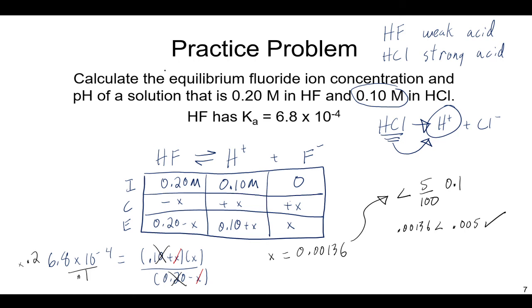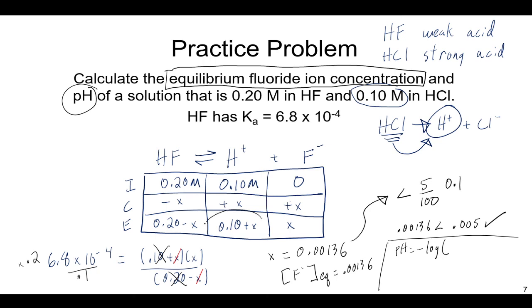This equilibrium fluoride ion concentration, that is what x represents. If you're calculating the pH, which we might do and have to do here, a lot of students will just take negative log of this x because they're used to this x representing the H plus. But here, there's H plus from the HCl. So this x represents my concentration of fluoride at equilibrium. And so my pH is going to be negative log of not just x, but 0.1 plus x. So 0.1 plus this small number gives me 0.10136. And so the negative log of that gives me my pH, which here is going to be 0.994.